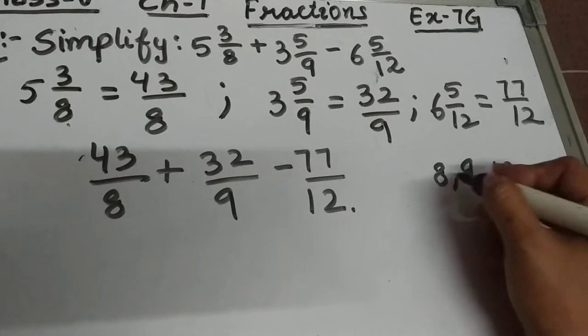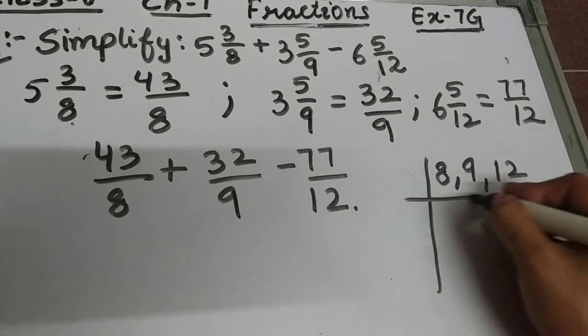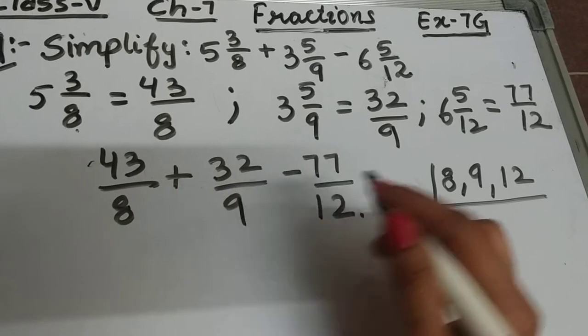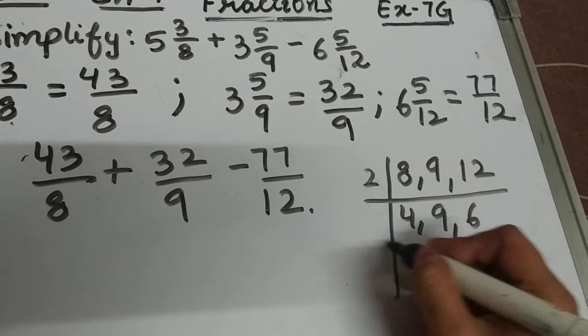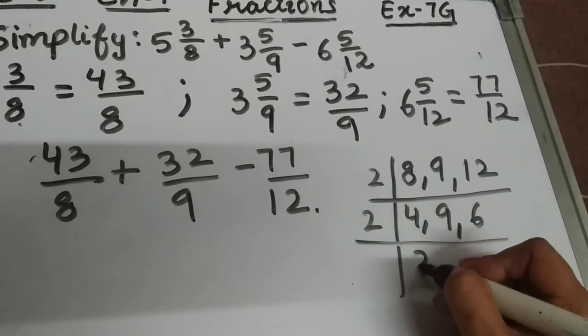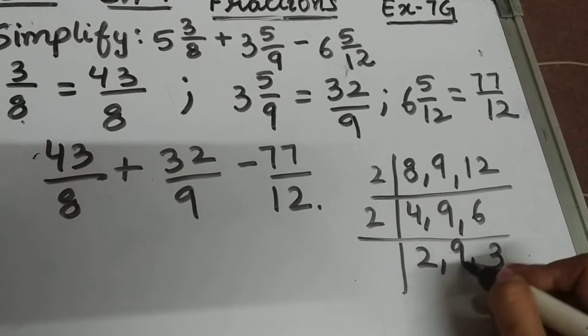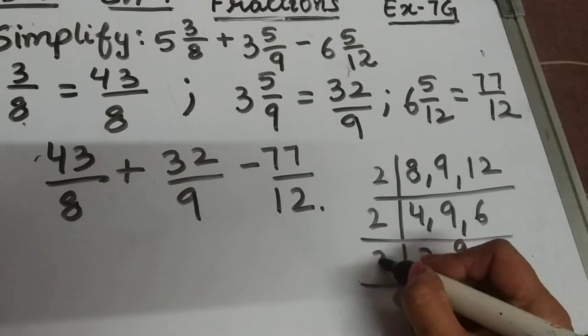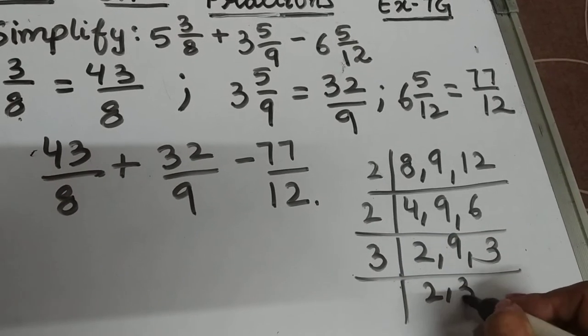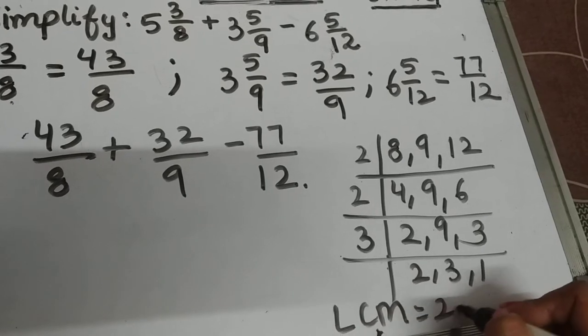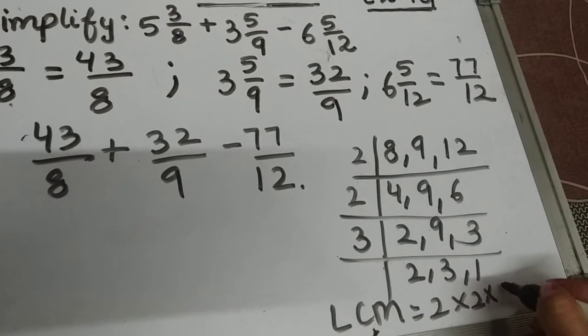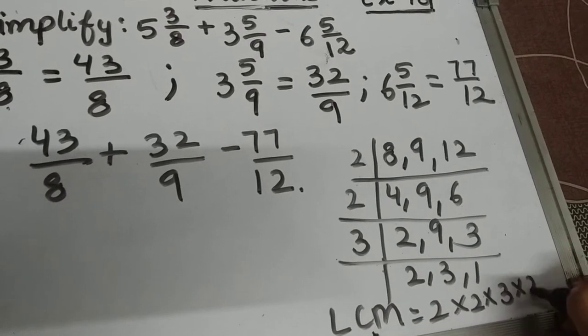2×4=8, 2×6=12, 2×2=4, 2×3=6, 3×3=9, 3×1=3. So LCM will be 2×2×2×3...